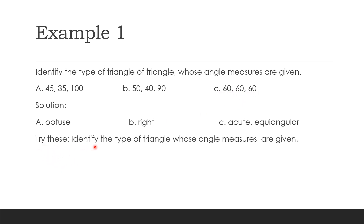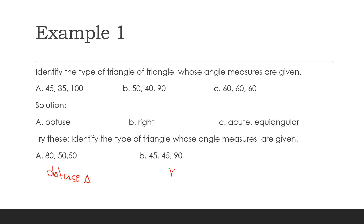Now let's try this example. Identify the type of triangle whose angle measures are given. We have 80°, 50°, 50° — what do you think? This is an acute triangle. Then we have 45°, 90° — of course, this is a right triangle.